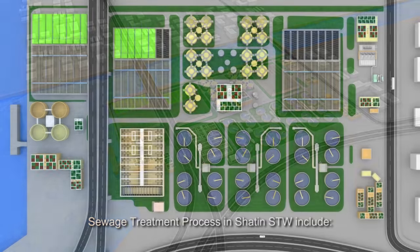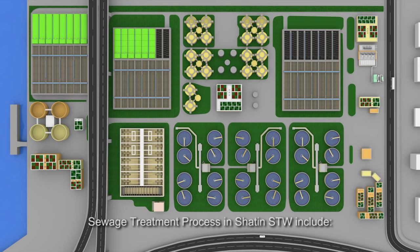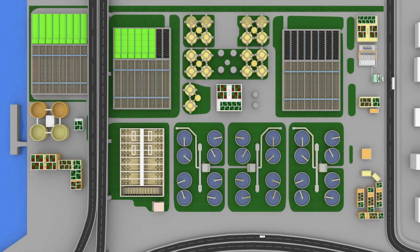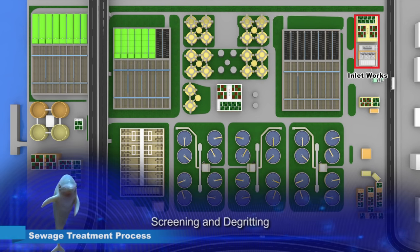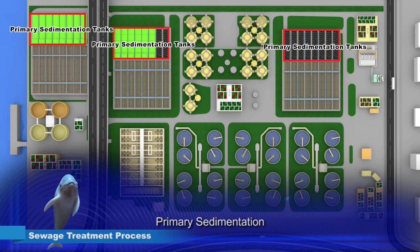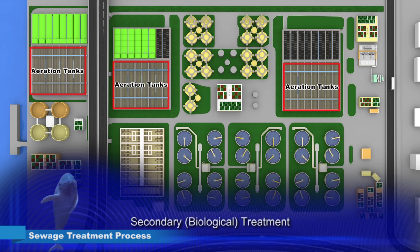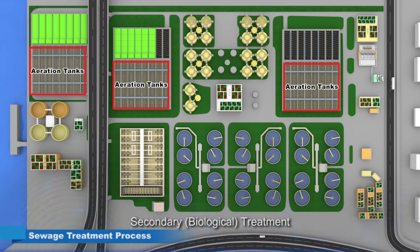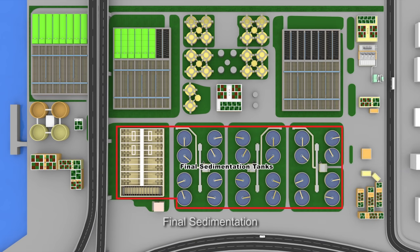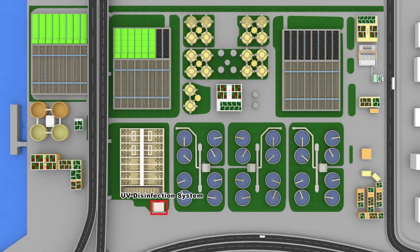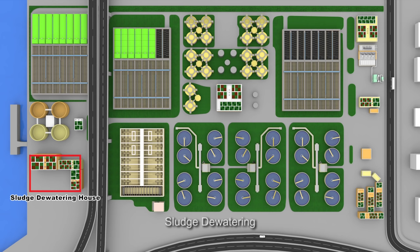The sewage treatment process at Sha Tin Sewage Treatment Works includes: screening and grit removal, primary sedimentation, secondary biological treatment, final sedimentation, UV disinfection, sludge digestion, and sludge dewatering.